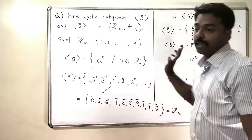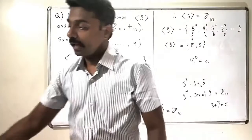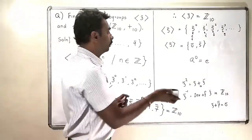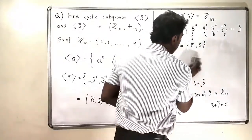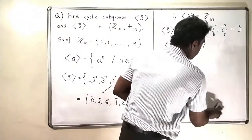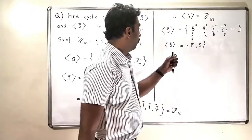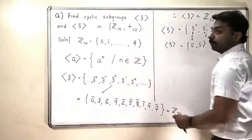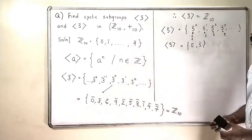So this is the way you calculate cyclic subgroups generated by elements. With this, our problem of finding the cyclic subgroups gets over.